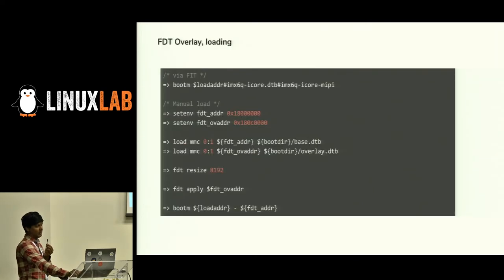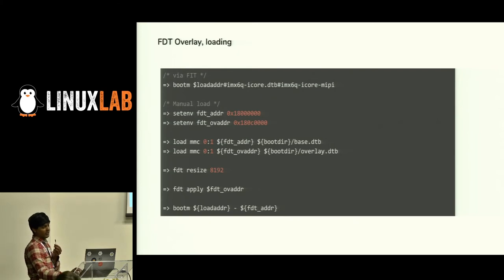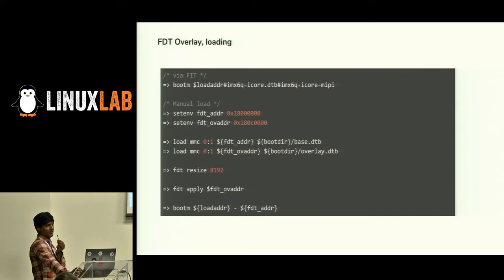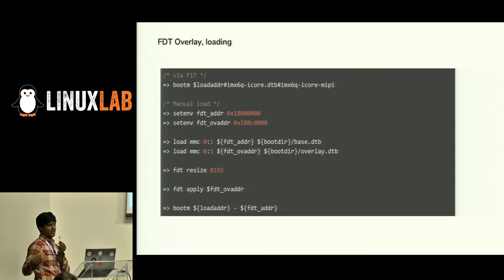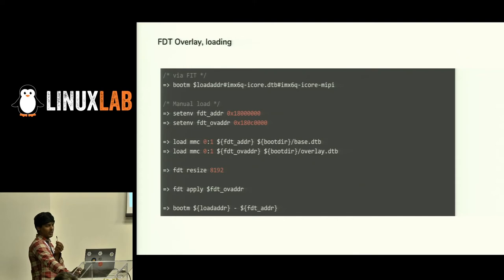You can load overlays in UBoot in two ways: one is manual and the other is via the FIT image overlay area. In the FIT image approach, you mention the load address of the Linux kernel, the DTB, and the DTO (overlay). The bootm command reads the FIT image, identifies where the DTB and overlay reside, and loads the DTB with the overlay combination. You can also load manually by loading the DTB to a specific memory location, resize it, and load it directly.